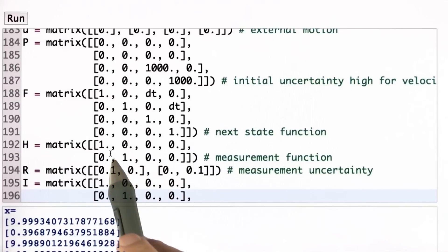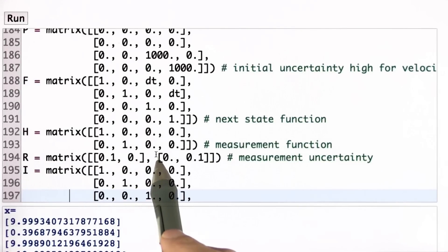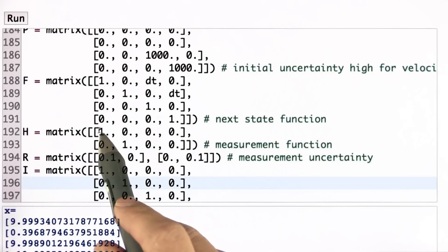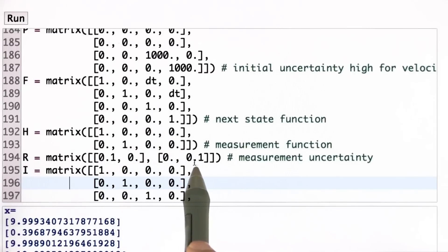And then as I scroll down, the H matrix is a 4 by 2 projection matrix, where we project out the x dimension and the y dimension without any velocities. For the measurement uncertainty, I assume that each measurement has uncertainty covariance of 0.1, and these are along the main diagonal of this 2 by 2 measurement noise or uncertainty matrix.